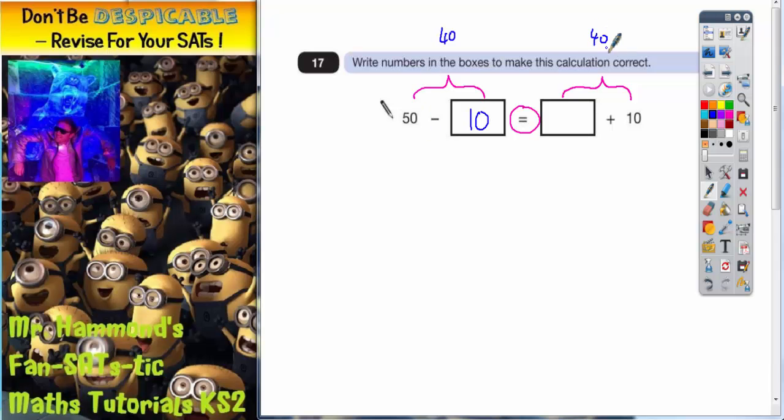So if the answer to that side is 40, the answer to this side would need to be 40. So if something plus 10 would need to make 40, well what plus 10 makes 40? It's going to be 30. So that is one possible set of answers.